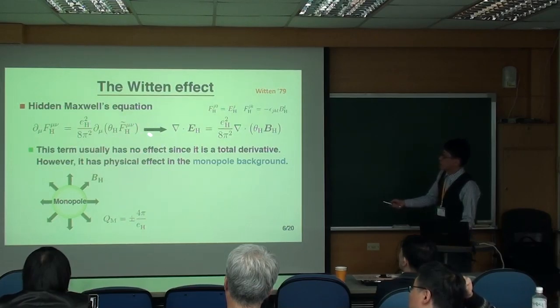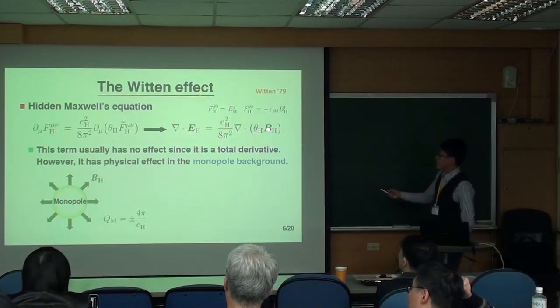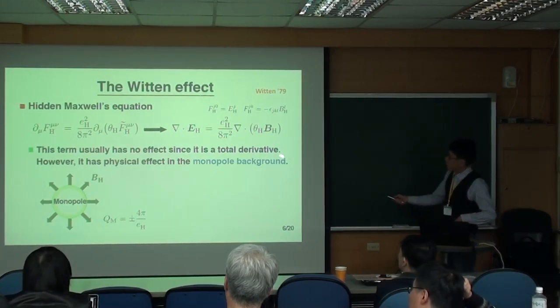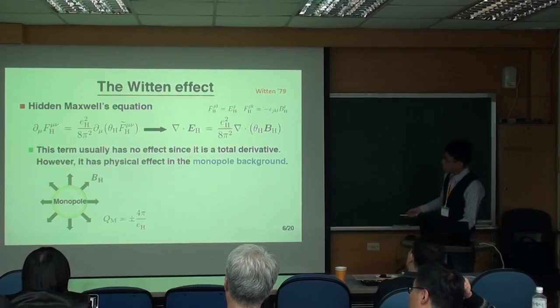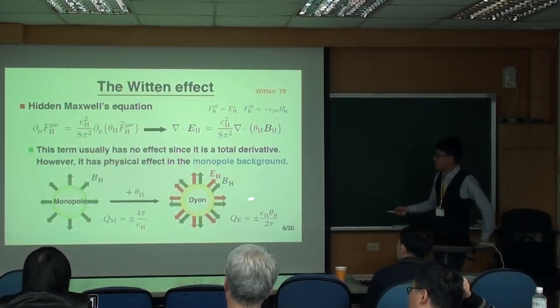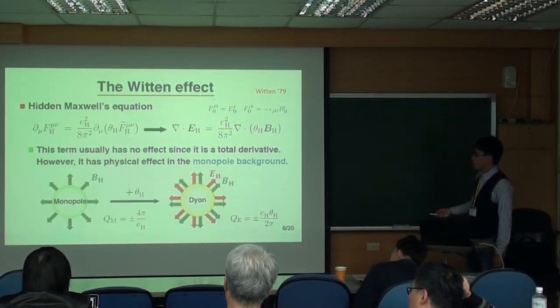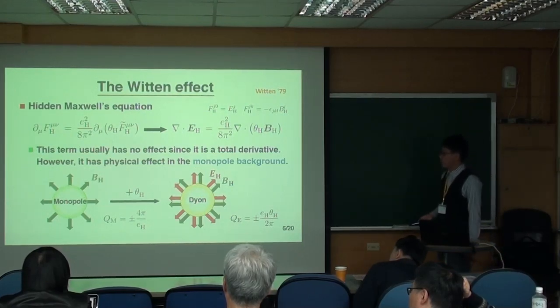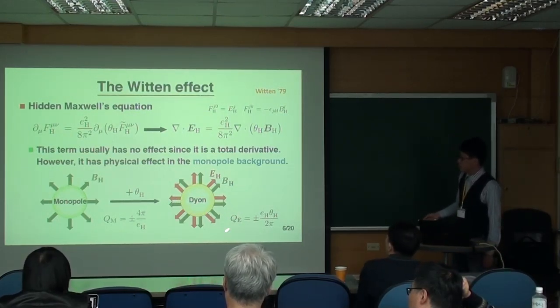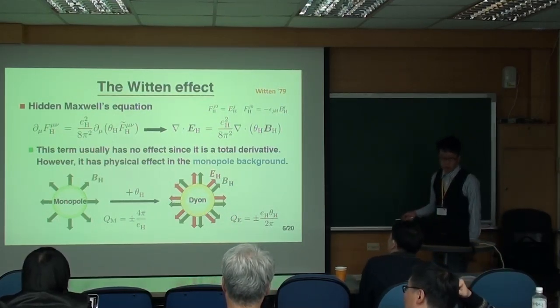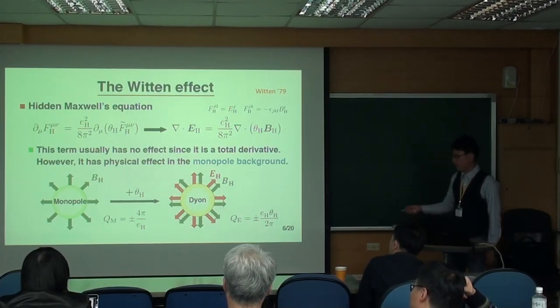If there's a theta term and a monopole, then you can find that actually this monopole also can produce the electric field. And then it will become a dyon. So a dyon is a kind of particle which possesses both electric and magnetic charges.